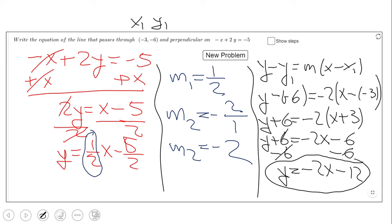And the last step: subtract 6. This is the equation of the line we're looking for. It is perpendicular to -x + 2y = -5 and goes through (-3, -6).